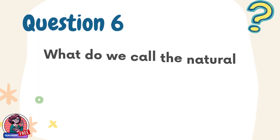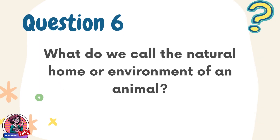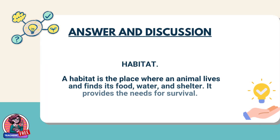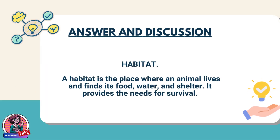Question 6. What do we call the natural home or environment of an animal? Answer: Habitat. A habitat is the place where an animal lives and finds its food, water, and shelter. It provides the needs for survival.